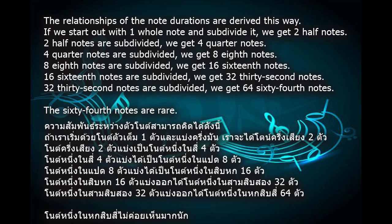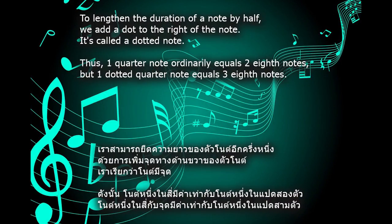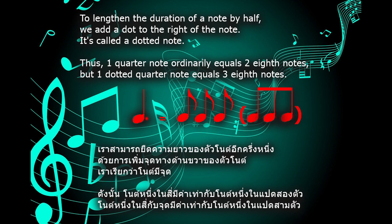The sixty-fourth notes are rare. To lengthen the duration of a note by half, we add a dot to the right of the note. It's called a dotted note. Thus, one quarter note ordinarily equals two eighth notes, but one dotted quarter note equals three eighth notes.